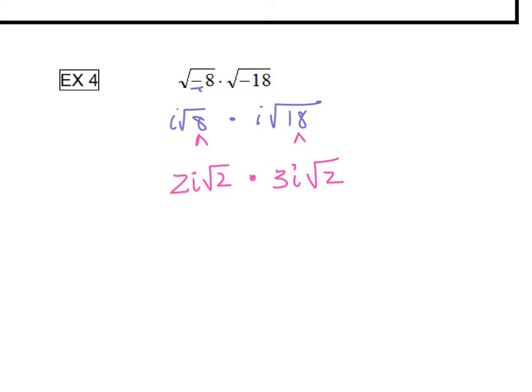Alright, so now when we multiply this, we're going to multiply the like parts. So we have a 2 times 3, which is 6. We have an i times an i, which is i squared. We'll deal with that in a minute. And then square root of 2 times square root of 2 is 2.